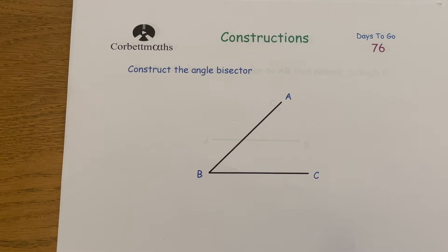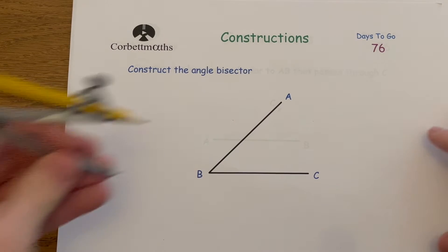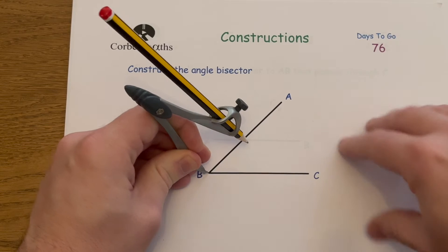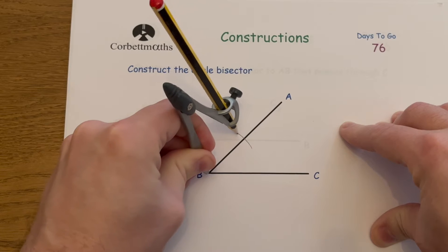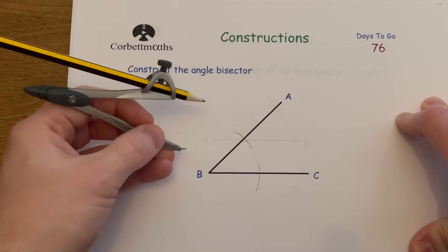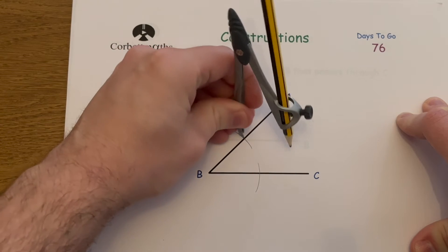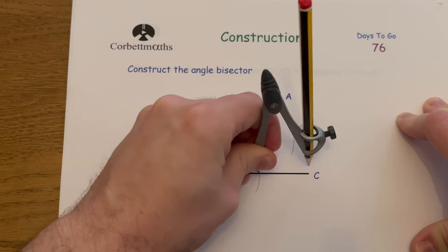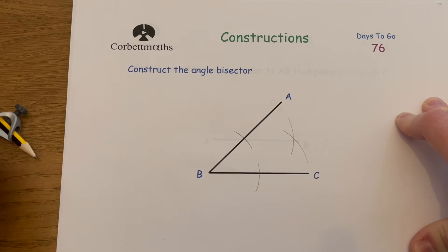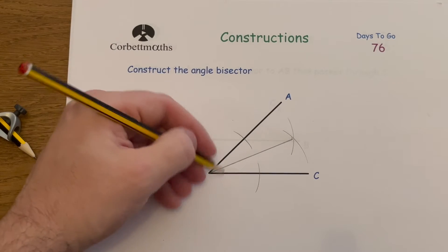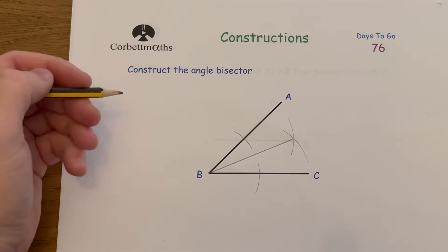Now let's look at the angle bisector. We've got an angle ABC — an acute angle — and we're going to construct the angle bisector. Put the point of the compass on B and set the pencil a fair distance away, not too far and not too close. Draw an arc that intersects line AB and another arc that intersects line BC. Then put the compass point where each arc meets its line, and draw two arcs towards the middle of the angle. Join B to where those arcs intersect — that's the angle bisector. If the angle was 40 degrees, each half would be 20 degrees.